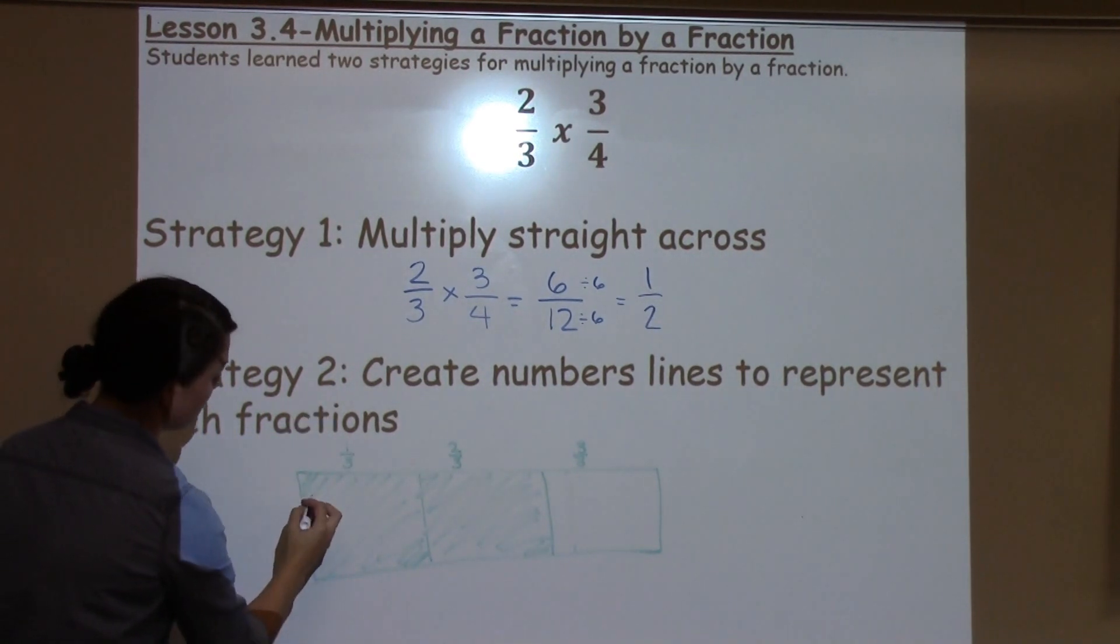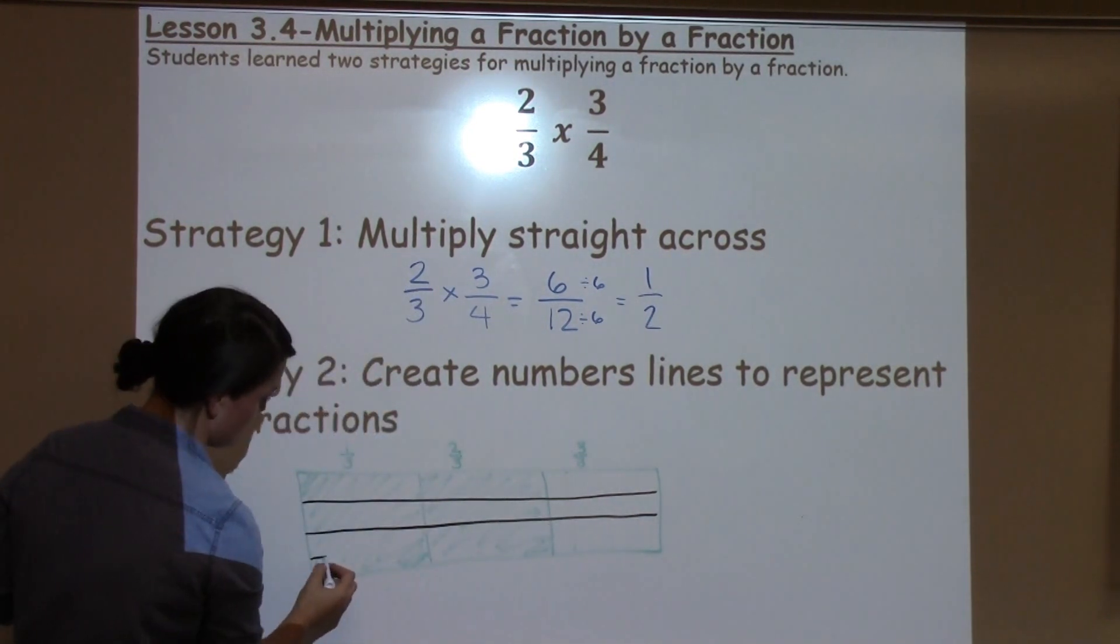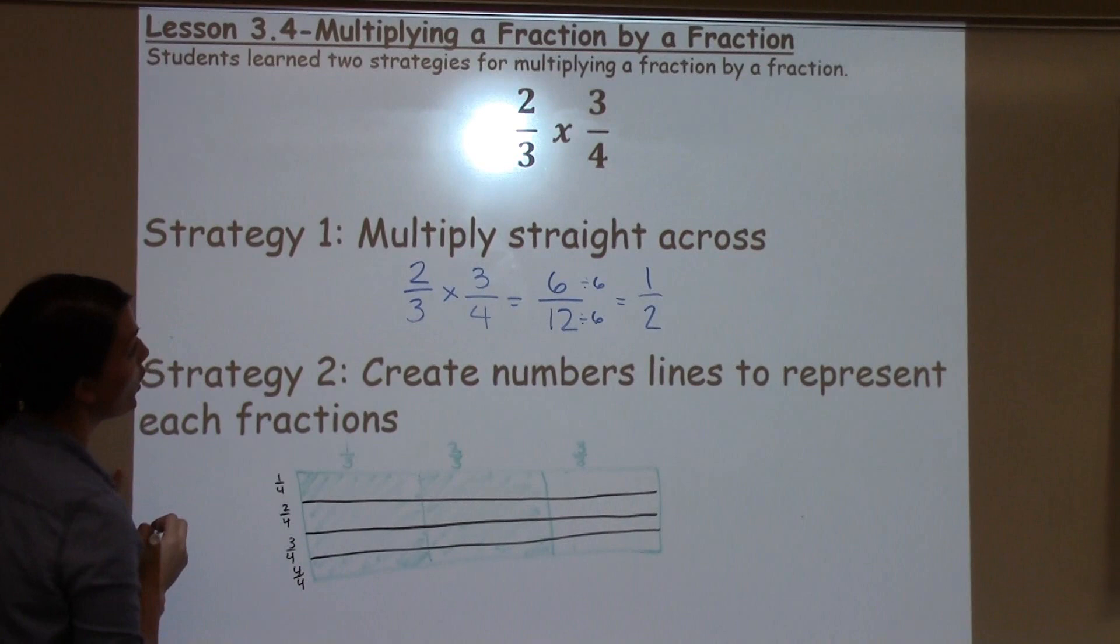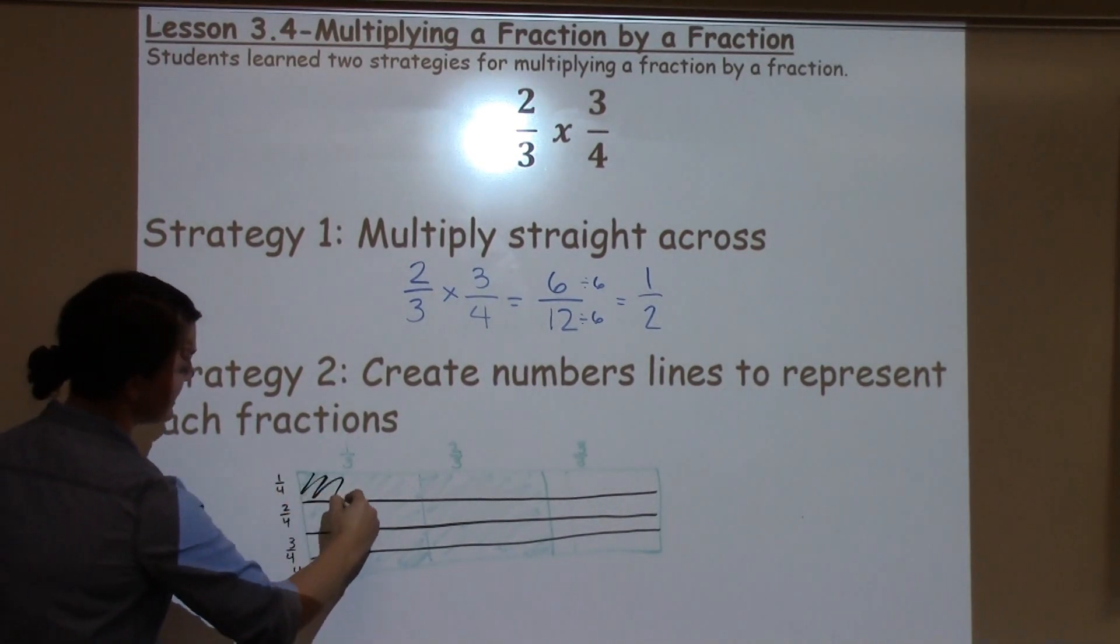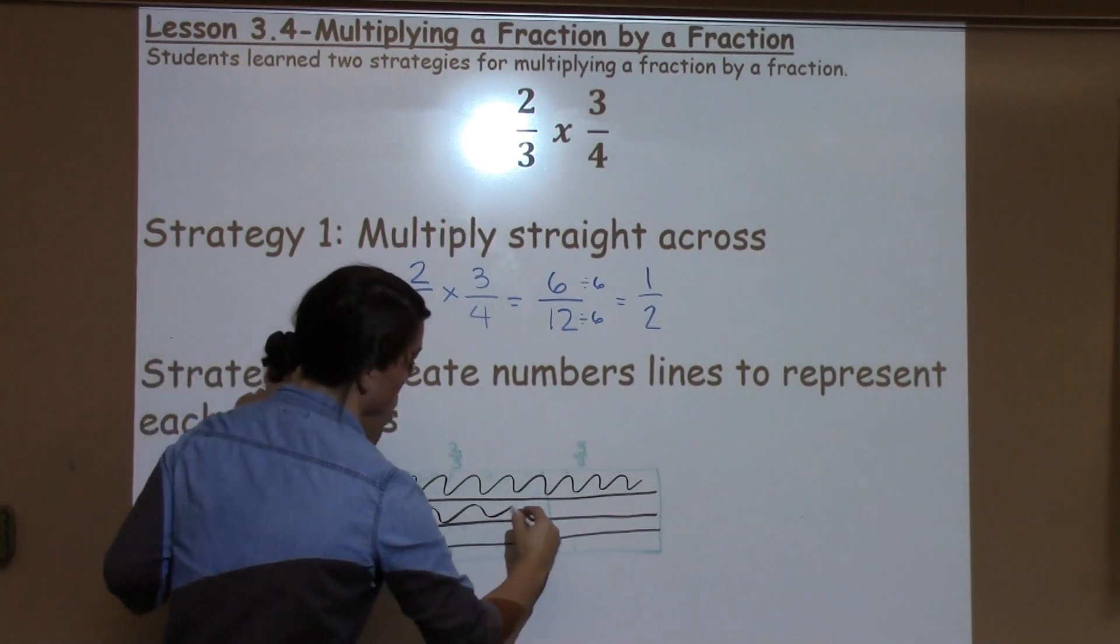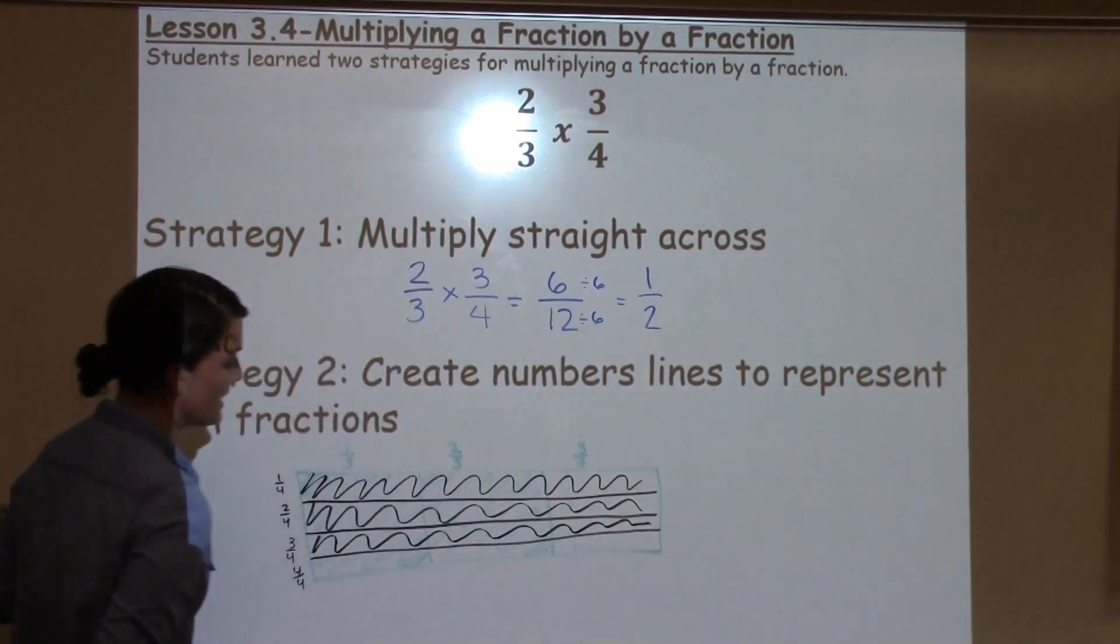Now, I want to break it into four sections going across: 1, 2, 3, 4. So, this would be 1 fourth, 2 fourths, 3 fourths, and 4 fourths, or one whole going down. And I want to shade in three of those. So, 1, 2, and 3.